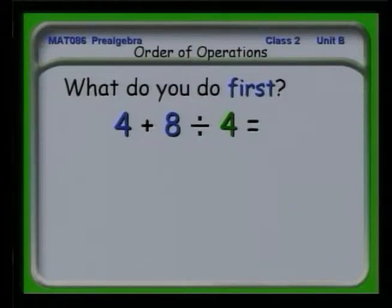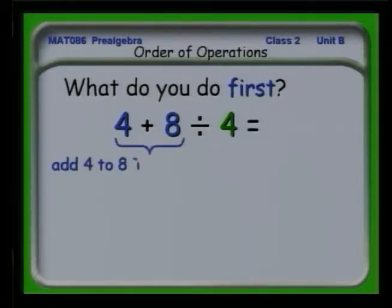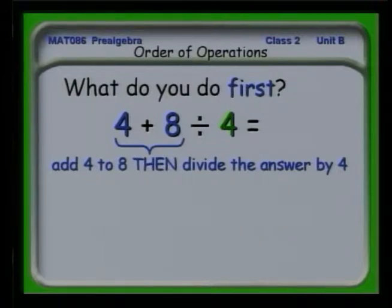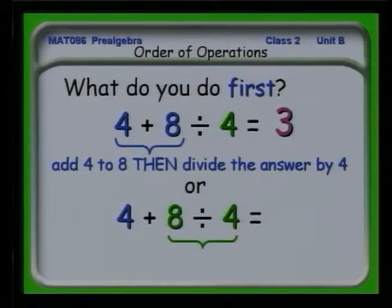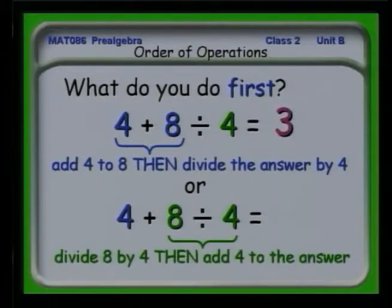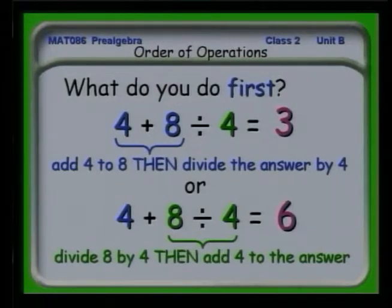Let's look at that order. For example, if we have 4 plus 8 divided by 4, what do we do first? Do we take 4 plus 8, add that, and then divide by 4? If we do that, we get 3. On the other hand, do we take the 8, divide that by 4, then add the 4? If we do that, we get 6. So we need a standard so that we know what we're talking about and can arrive at the same answer.